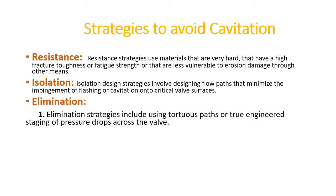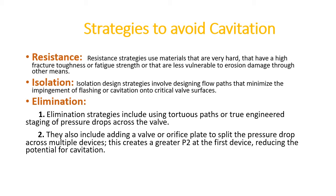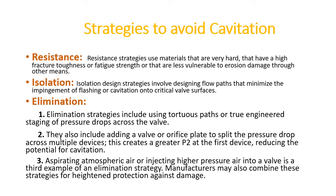Third is elimination, and there are multiple techniques. One technique uses a torturous path or pressure staging — stretching the pressure drop across the valve into multiple stages to prevent pressure from falling below the vapor pressure, thereby avoiding cavitation. Another technique involves adding another valve or an orifice plate to split the pressure drop across multiple devices, creating greater pressure in the first device and reducing cavitation potential. Third is aspiration or aeration, where high-pressure air is injected into the valve to eliminate chances of cavitation.